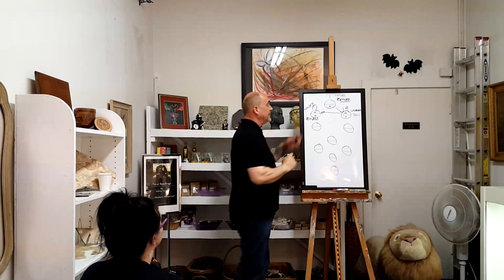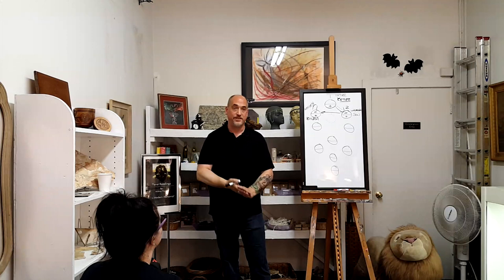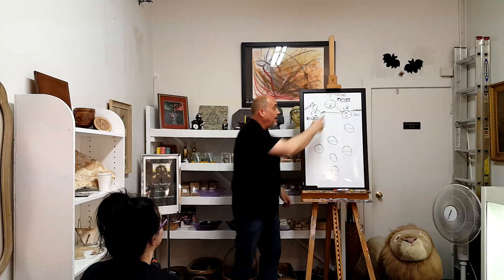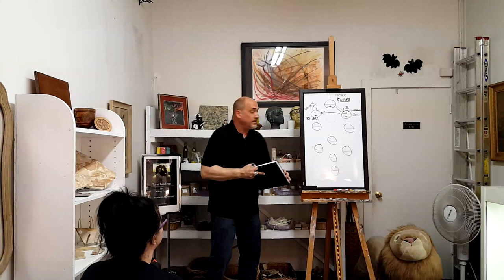Kether, Chokma, and Binah. The lines between them are called paths, and there are 22 paths between each of the Sephiroth — just like in the tarot there are 22 major arcana cards. Each major arcana card will teach you the nature, complexity, and attributes of these paths. So moving from Sphere 1 to Sphere 3, the card placed there would be the Magician. Moving from Sphere 1 to Sphere 2, the card between them would be the Fool.